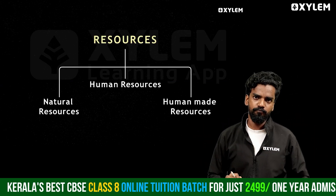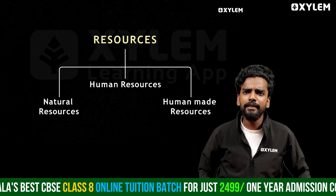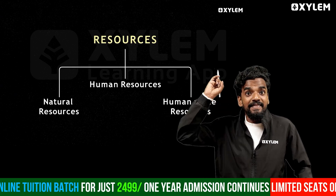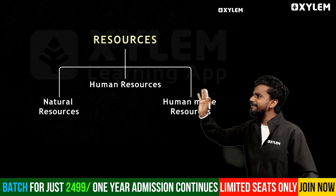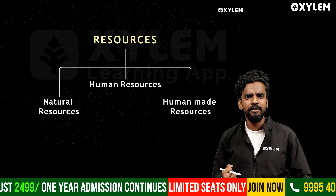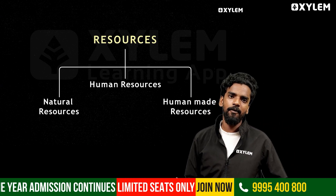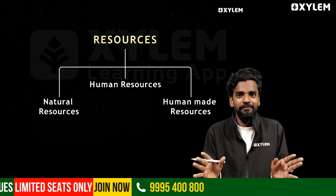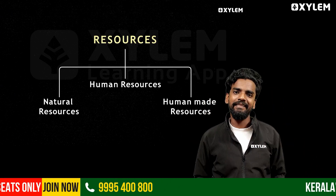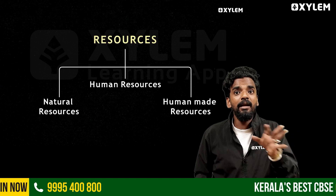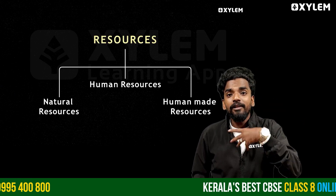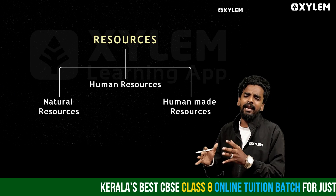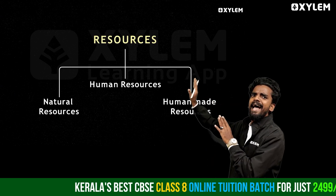Resources we can classify into three. The first one is natural resources. The second one is human resources. And the third one is human-made resources. Natural resources are created by nature — for example, mountains, the sea, or the ocean, or anything else. That is known as natural resources.